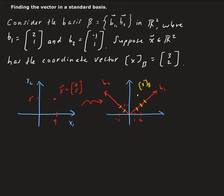So again, our basis vectors consist of b1 and b2. And we have the coordinate vector in terms of our basis vectors, 3, 2.